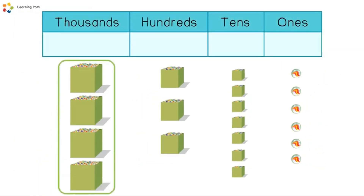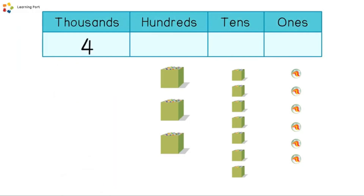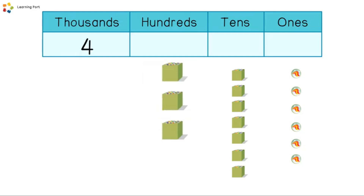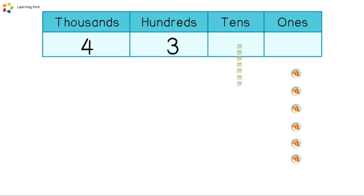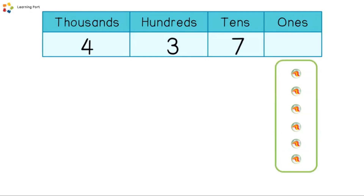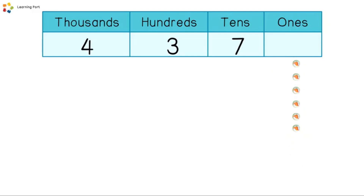Fabian has four boxes of thousands, so we put four at the place value of thousands. He has three boxes of hundreds marbles, so we put three at the place value of hundreds. He has seven small boxes of tens, so we put seven at the place value of tens. He has six marbles in his hand, so we put six at the place value of ones.